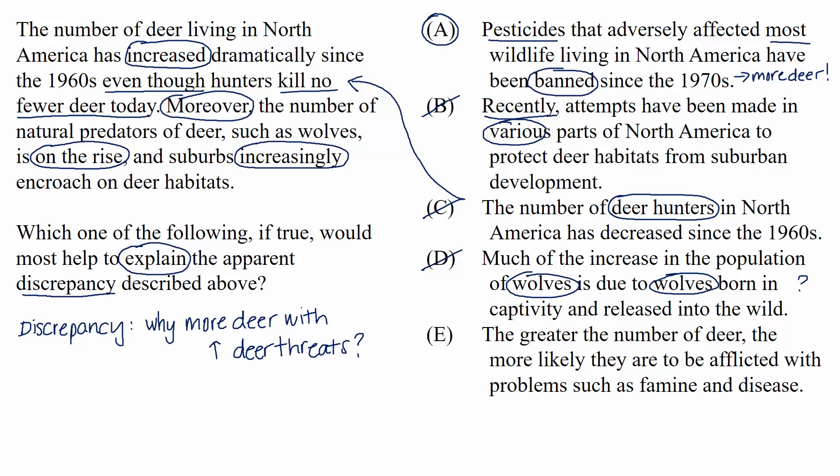Choice E: the greater the number of deer, the more likely they are to be afflicted with problems such as famine and disease. This doesn't help explain why there are more deer today. In fact, if anything, it makes the situation even more surprising. Since we're told the number of deer has increased dramatically, we would expect them to be more hurt by problems such as famine and disease. So a choice that makes the situation even more surprising is the opposite of what we're looking for in an answer.